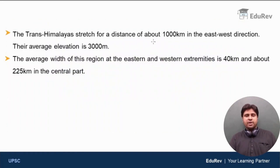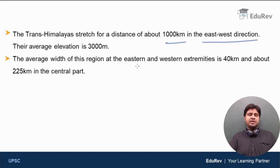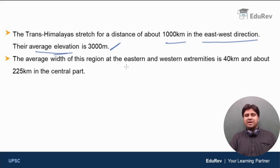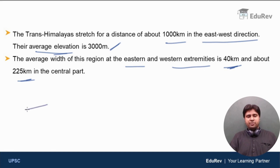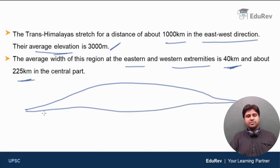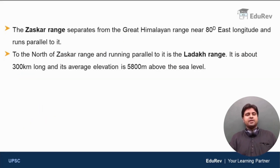The Trans-Himalayas stretch for a distance of about 1,000 km in the east-west direction, and the average elevation of all the ranges in the Trans-Himalayas is 3,000 meters. The average width of this region at the eastern and western extremities is 40 km, and in the center it is very wide at around 225 km. So at the extremities or ends it is narrow at only 40 km, but in the central part it is around 225 km wide. Let us now start discussing about the ranges, beginning with the Zaskar Range.